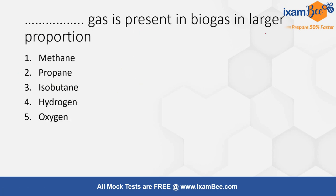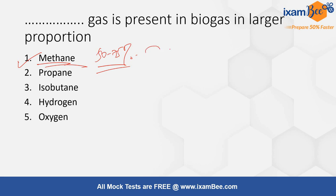The next question is: which gas is present in biogas in the largest proportion — options are methane, propane, isobutane, hydrogen, or oxygen. The correct answer is option 1, methane. Approximately 50 to 75 percent of methane gas is present in biogas, followed by carbon dioxide, then nitrogen, and the remaining hydrogen and other gases. So the major proportion is methane.